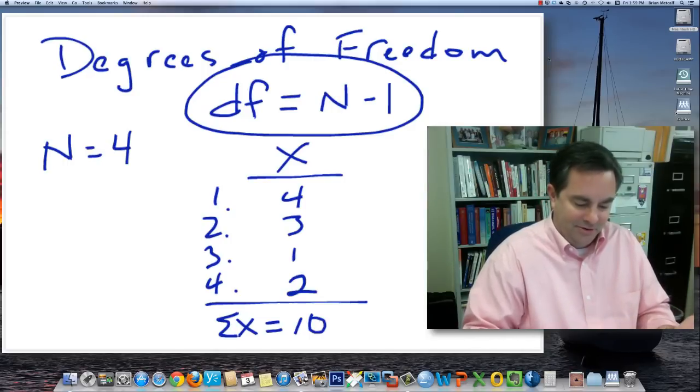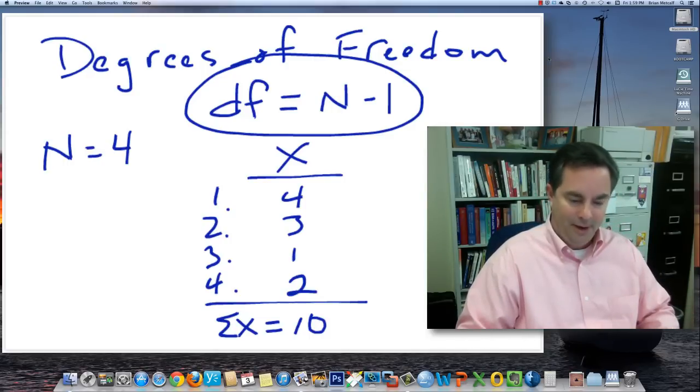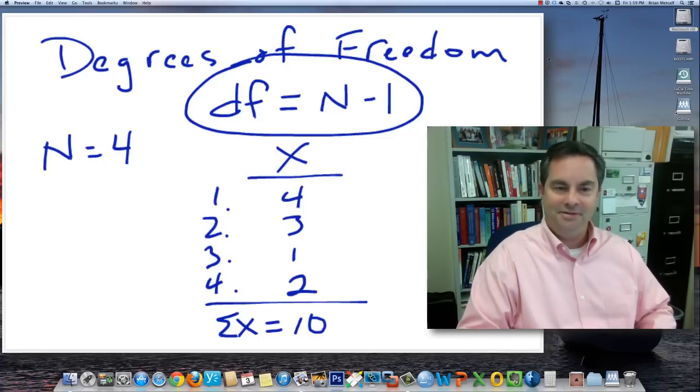So for now, degrees of freedom is equal to n minus 1. There you go. The crazy case of degrees of freedom. See you next time.